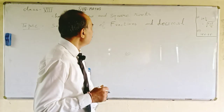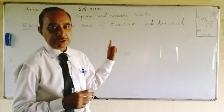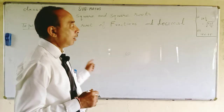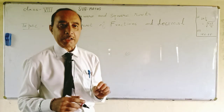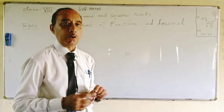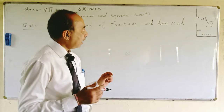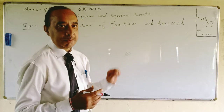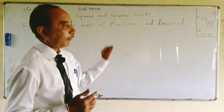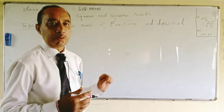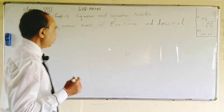Chapter 3, squares and square roots. Our next topic is to find the square root of fractions and decimals. First, we will find the square root of fractional numbers.